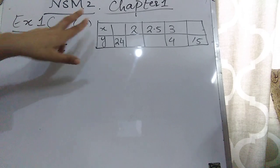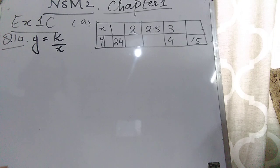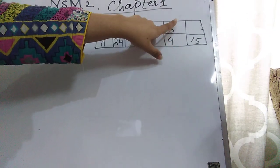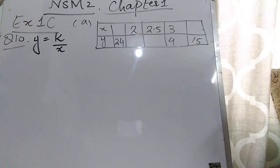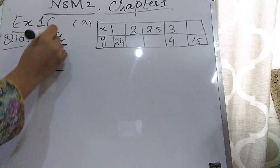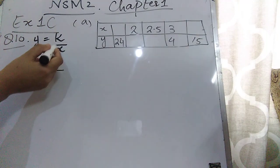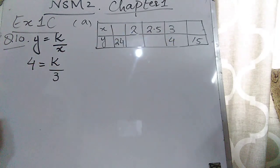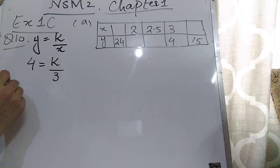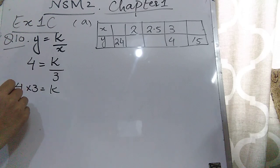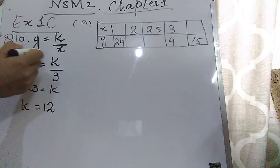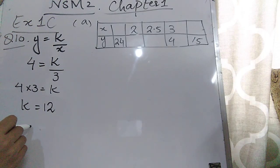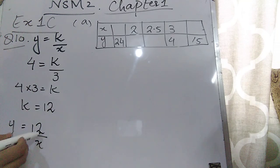To find out the value of k, you need to put the values of y and x. In the table, you will see that both values of x and y are given. The value of y is 4 and the value of x is 3. Since 3 is dividing, when we go to the other side it will multiply, so k = 3 × 4 = 12. The equation is y = 12/x.